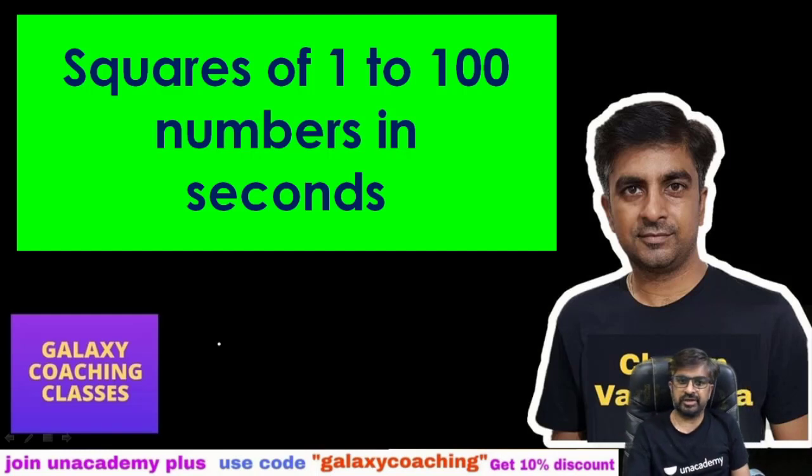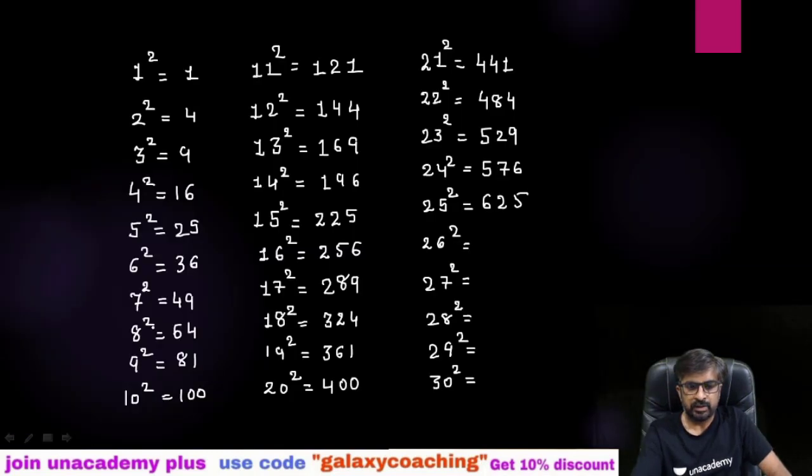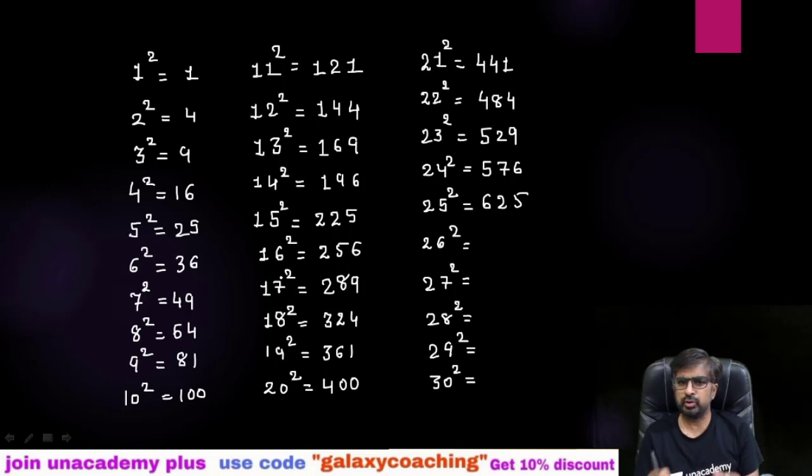Hello friends, my name is Chetan Vadadya and today we are going to find out squares of 1 to 100 numbers in seconds. How you can easily find out squares of 1 to 100 numbers in seconds, I will show you. Before starting, these are squares from 1 to 25 numbers. From these squares you will get many different patterns. By that pattern you will easily find out squares of different numbers.